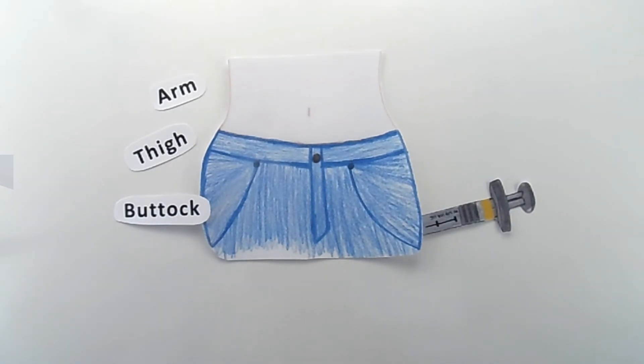Glucagon is essentially releasing stored sugar in your body to bring up your blood sugar quickly. We kept this video brief and to the point because in an emergency, every second counts.